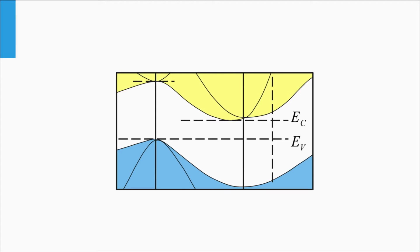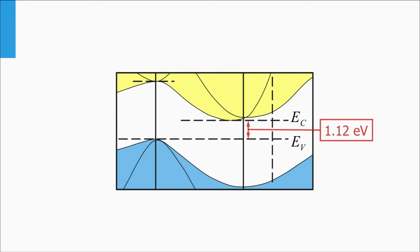Now we zoom into the band gap area. The band gap energy is the difference between those two levels and equals 1.12 eV, or 1107 nm expressed in wavelengths. This transition is an indirect transition. The charge carriers need both energy and momentum transfer to be excited.